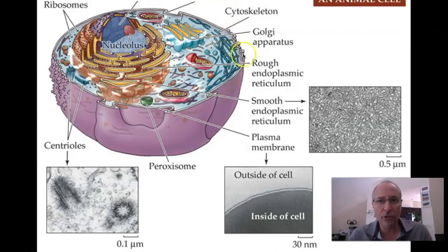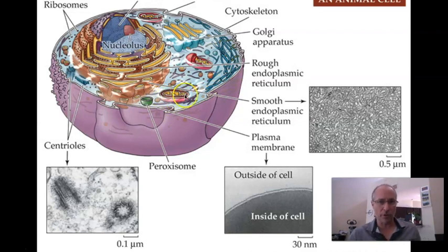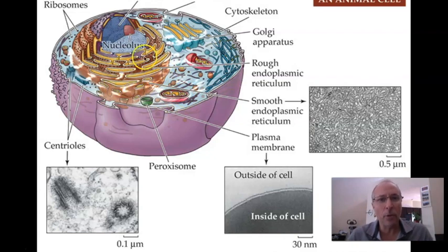This is an animal cell — we know because it doesn't have a cell wall. Animals by definition do not have cell walls. Here you've got the plasma membrane around the outside. This structure is one you know: the powerhouse of the cell, the mitochondrion. And then we have inside these membranes.